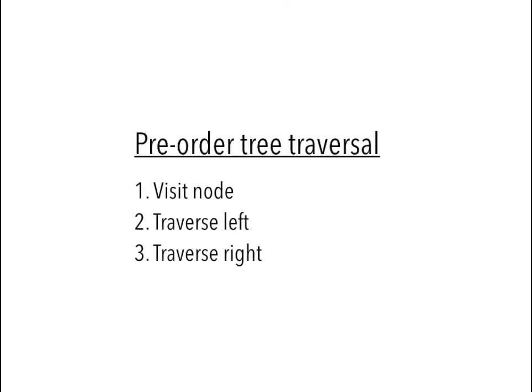Pre-order traversal is normally done recursively and can be broken down into three steps. First, visit the node. Second, traverse the left subtree. Finally, traverse the right subtree.